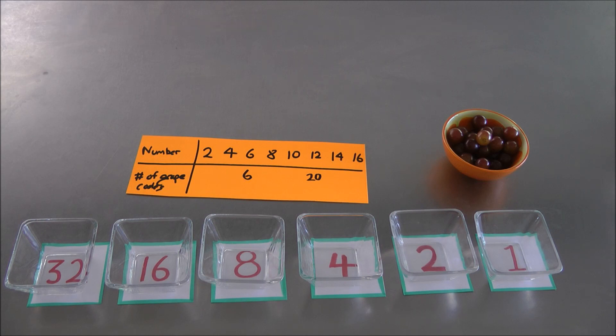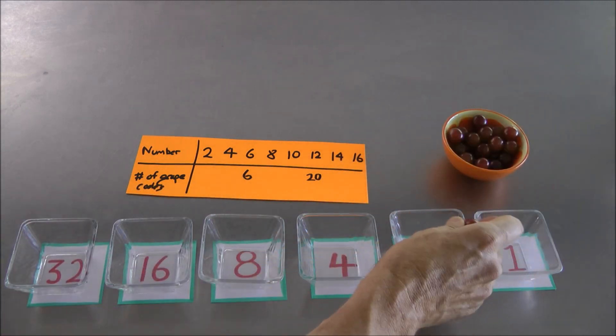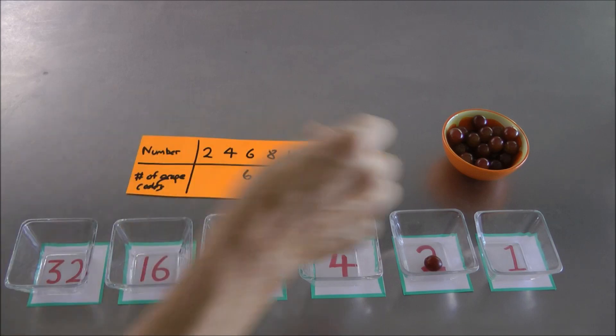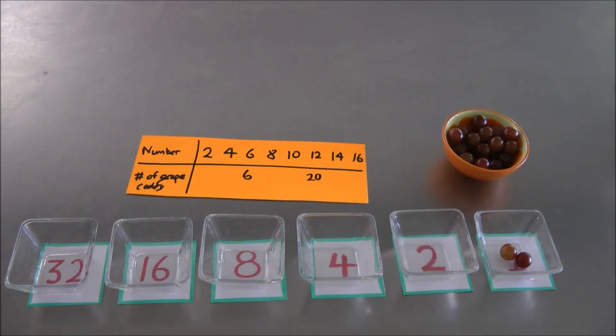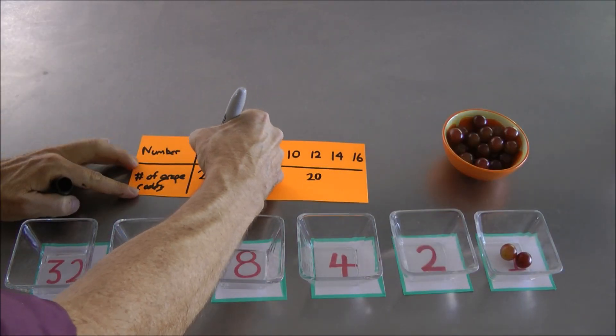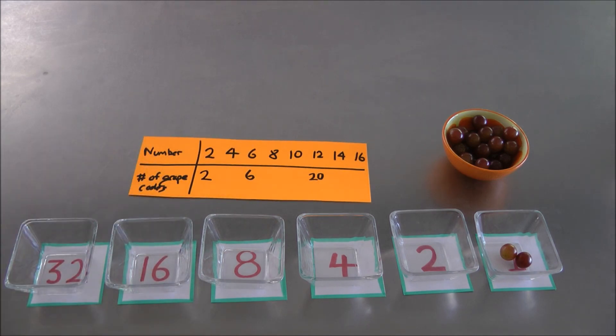But let's look at some other counts of grape codes. For example, how many grape codes are there for number two? Well, that was not too bad. We could either do one grape in the two box or two grapes in the one box. And you see pretty quickly, that's it. There are two ways to represent the number two in terms of grapes in these dishes.